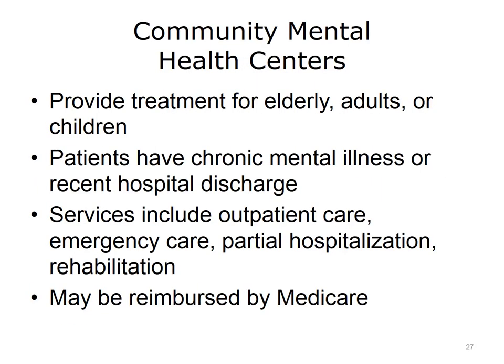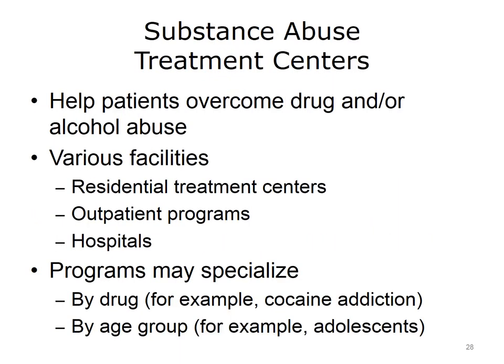A community mental health center provides services for individuals of all ages who have a chronic mental illness or were recently discharged from a psychiatric hospital. These centers provide outpatient care, 24-hour emergency care, day treatment or partial hospitalization, and psychosocial rehabilitation to help patients eventually function on their own. Facilities that meet these criteria are reimbursed for services by Medicare. Substance abuse treatment centers help individuals recover from drug and/or alcohol abuse. Types of facilities include residential treatment centers, outpatient treatment programs, and hospitals. The center may specialize in treating a certain form of drug abuse, such as alcoholism or cocaine addiction, or a certain age group, such as adolescents.